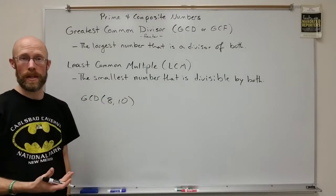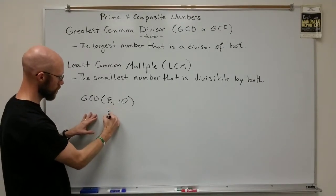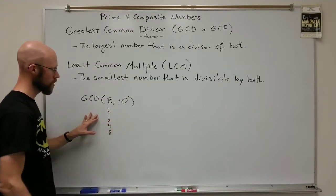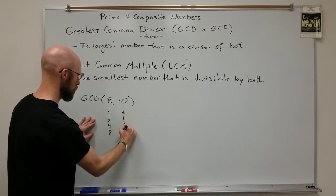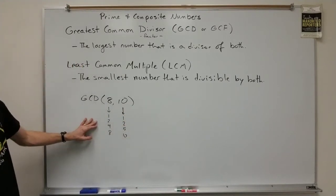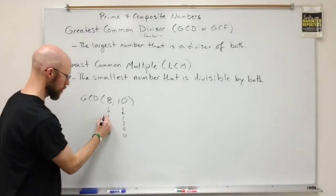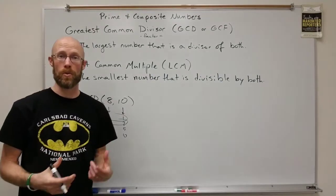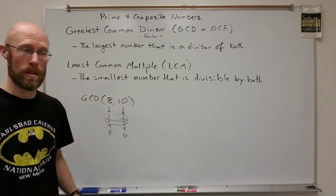Well, the GCD of 8 and 10 is simply, if you look at all the divisors of 8, you have 1, 2, 4, and 8. And if you look at all the divisors of 10, you have 1, 2, 5, and 10. Of this list, which ones are common? Well, the 1 is common and the 2 is common. And out of those two common divisors, we want the greatest one, which in this case would be 2.